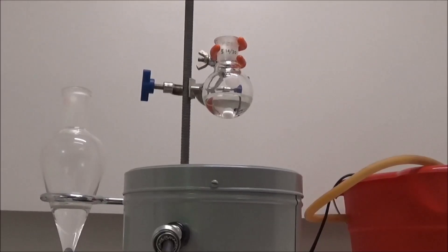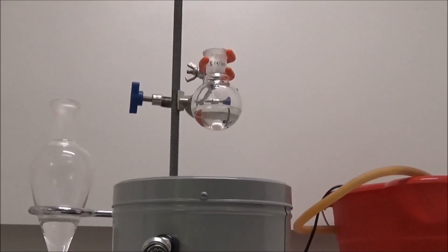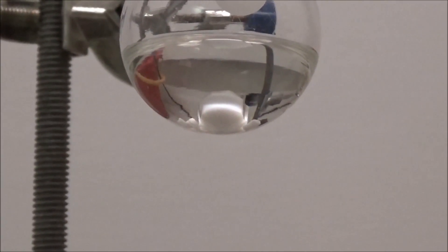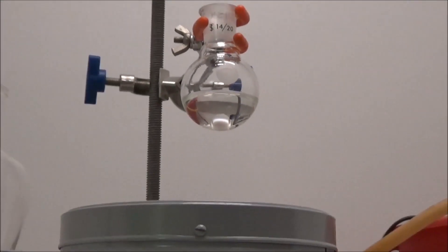The liquid was transferred to a 25 milliliter round bottom flask and a stir bar was added. Unfortunately, I spilled a bunch and got some calcium chloride into the flask.